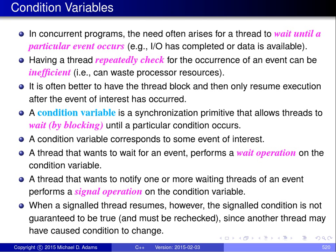In concurrent programs, the need often arises for a thread to wait until a particular event occurs. For example, consider a thread reading from a disk. The thread issues a read operation to the disk, and then it needs to wait for the data from the read operation to become available. The thread could wait by simply spinning in a loop, repeatedly checking if the data is ready. Because the disk is very slow compared to the processor, the thread may execute millions of instructions in a loop simply checking if the data is ready yet. This constitutes a very inefficient use of processor resources. It would be much better if the thread would simply block and then only resume execution after the data is ready. And this is exactly what a synchronization primitive known as a condition variable allows us to do.